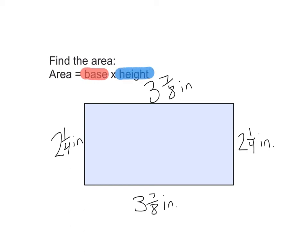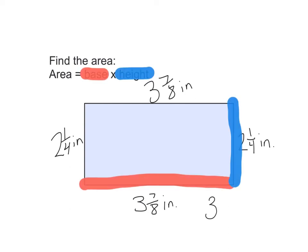Looking to go ahead and identify my base, I'm going to identify my base and my height. And so to find this area, all I need to do is three and seven-eighths times two and one-fourth. And I'm going to use a calculator to solve that.